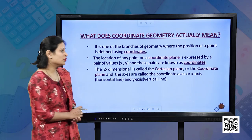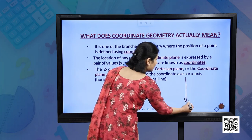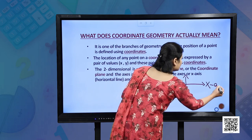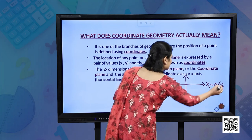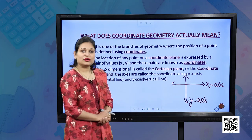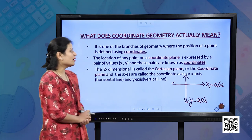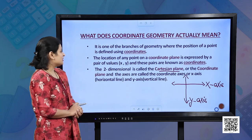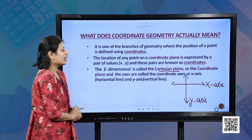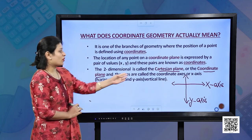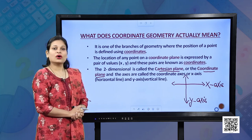What does coordinate geometry actually mean? For this we need to consider the x-axis and y-axis. These axes are used to recognize a point on a plane — one single plane which is known as the Cartesian plane. The two-dimensional plane is called the Cartesian plane or the coordinate plane, and the axes are called the coordinate axes, or x-axis and y-axis.